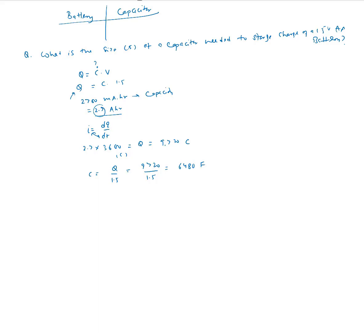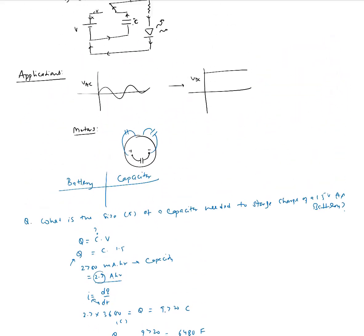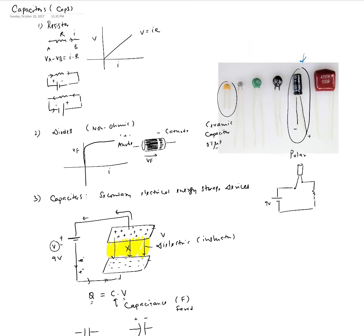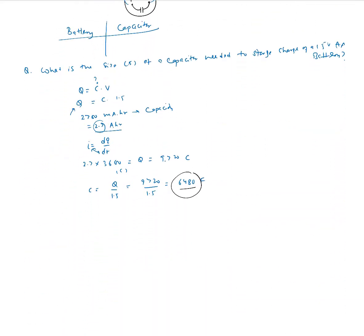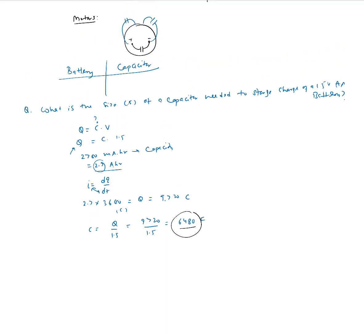So what is 6480 farads? That is actually a very large capacitor. Typical electrolytic capacitors are not even 1 farad. A capacitor of 1 farad might be the size of a soda can, meaning you would need 6480 soda-can-sized capacitors to store the total charge of a single 1.5 volt AA battery. Capacitors are not very good for storing large amounts of energy — their energy density is much poorer than batteries — but they can supply energy at a very fast burst rate that batteries cannot, because batteries have their internal chemistry limiting how fast they can supply current.